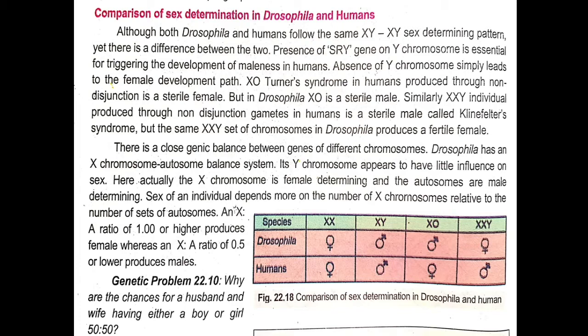In human beings, the absence of the Y chromosome simply leads to the female development path. So if the Y chromosome is absent, the female development path is followed. XO — Turner's syndrome — in humans is produced through non-disjunction and results in a sterile female.